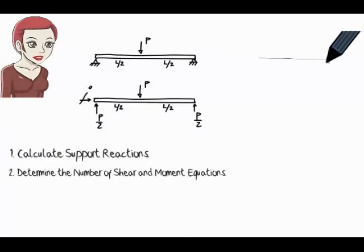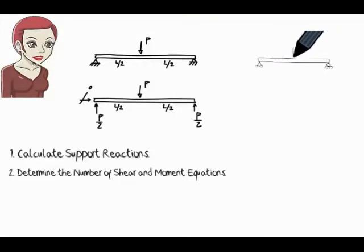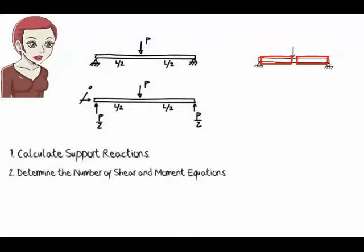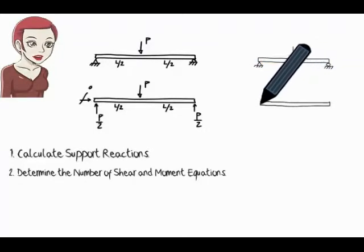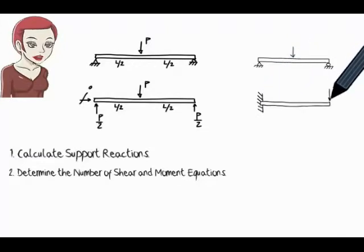How many pairs of shear and moment equations do we need for this beam? The load divides the beam into two segments, therefore we need two sets of equations: one for the left segment and another for the right segment. Here, the load does not divide the beam into multiple segments as it is applied at the tip of the beam. Therefore, we only need one shear equation and one moment equation for the entire beam.